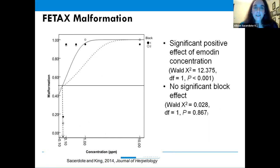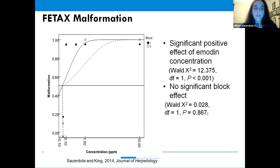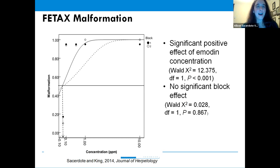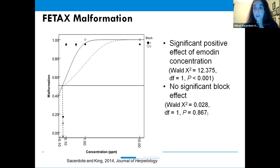We also found a significant effect of increasing emodin concentration on malformation rates in African clawed frog embryos. Notably, at concentrations as low as 0.1 ppm, we were already seeing high malformation rates — as soon as embryos were exposed, significant malformation occurred.